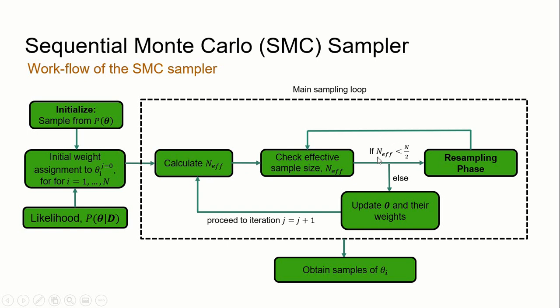The effective sample size is compared to a threshold of n/2. If the effective sample size is less than n/2, a resampling phase is initiated, where initial samples are resampled with replacement according to their weights. After resampling, weights are reset to 1/n. The algorithm then proceeds to update each sample and its respective weight. This procedure loops until a termination criterion is met, such as achieving the desired coefficient of variation of the estimates. If the effective sample size exceeds n/2, the resampling phase is skipped.